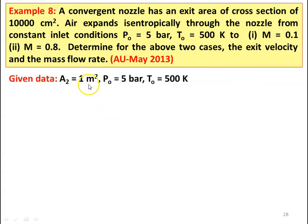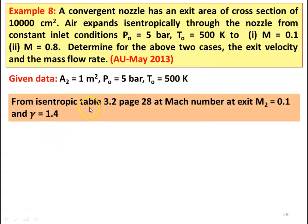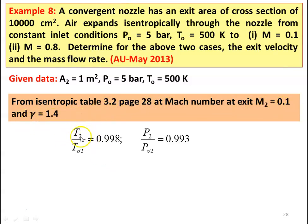A2 equal to 10,000 centimeter square equal to 1 meter square, stagnation pressure PO equal to 5 bar, stagnation temperature TO equal to 500 Kelvin. From isentropic table 3.2 page number 28 at Mach number at exit M2 equal to 0.1 and gamma equal to 1.4, we take T2 by TO2 equal to 0.998 and P2 by PO2 equal to 0.993.